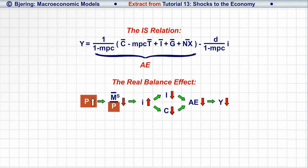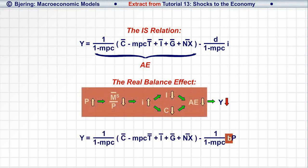We can reflect the effect of the price level, P, on equilibrium output and income, Y, as in this relation where the B indicates the effect on aggregate expenditure of a change in the price level.